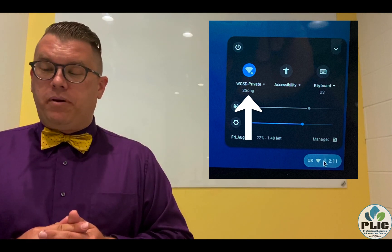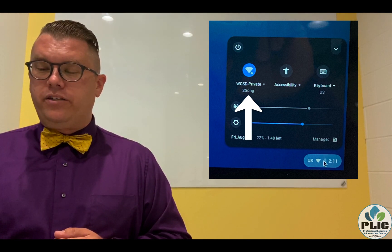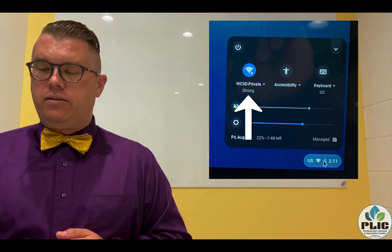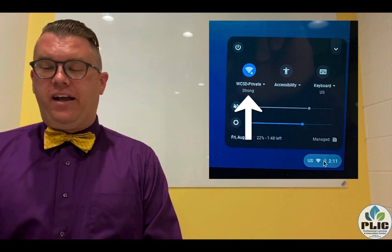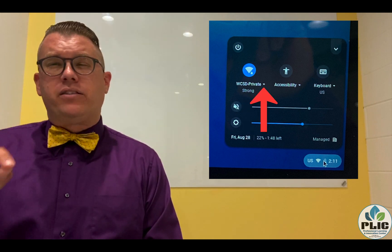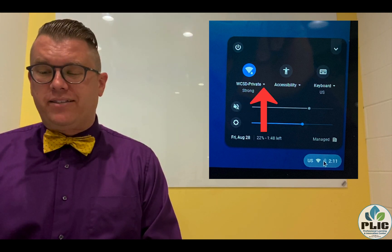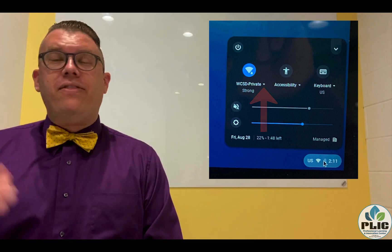It may say none available, but if you want to add a new Wi-Fi, all we need to do is click that little arrow next to the Wi-Fi name. There's a little arrow pointing down and that's going to bring up a new window.